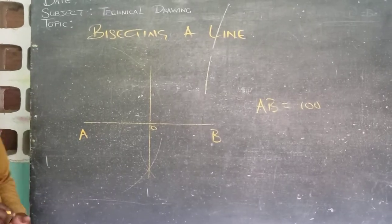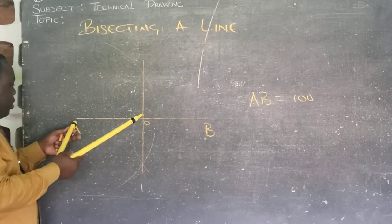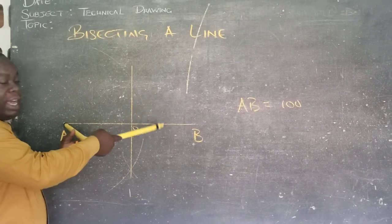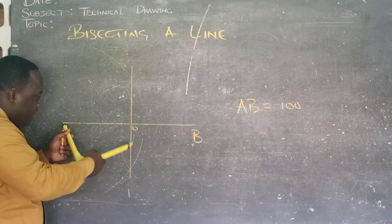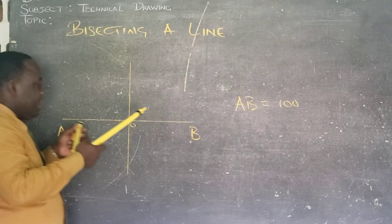Now, having done that, what we have done is that we open our compass to more than half the length of the given line. And we do a swing of arcs. And we swing our arcs in the positive domain, and we swing our arcs in the negative domain.